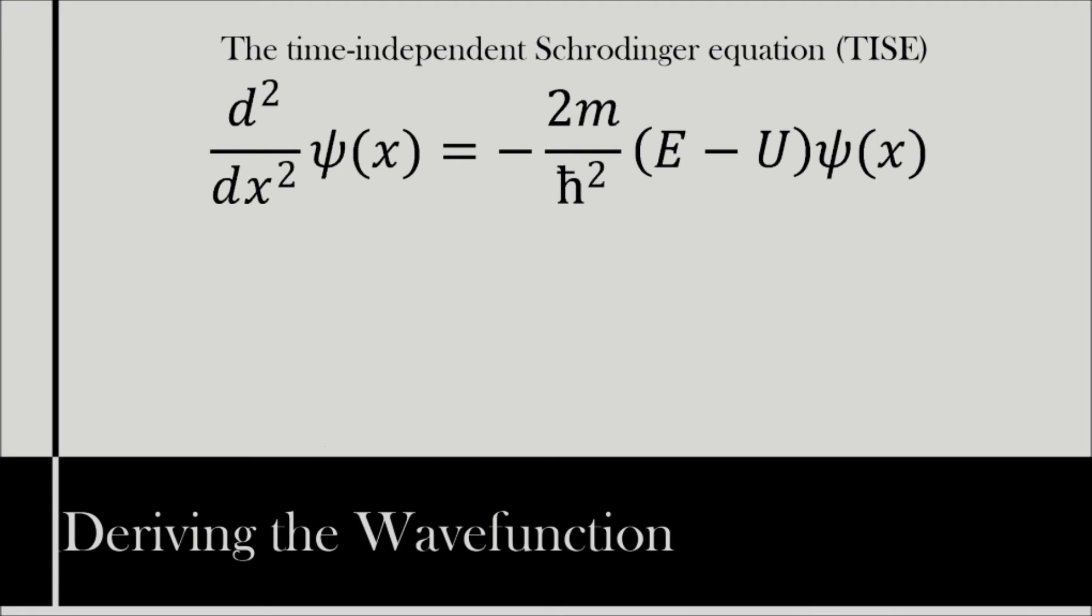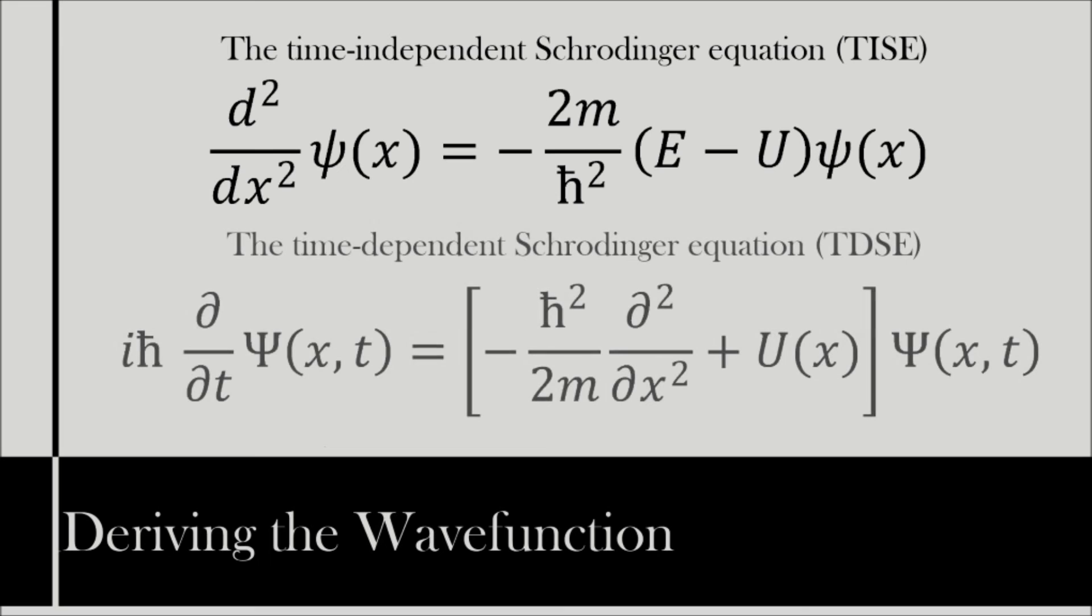The time dependent Schrödinger equation is, iℏ times partial differential with respect to t of ψ(x) equals, open brackets, minus ℏ² over 2m, times second order partial differential with respect to x, plus U(x), closed brackets, times ψ(x,t).